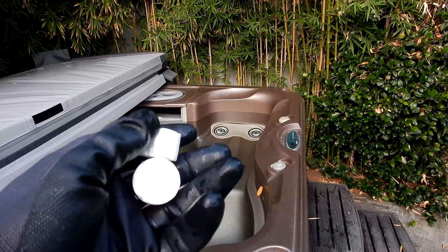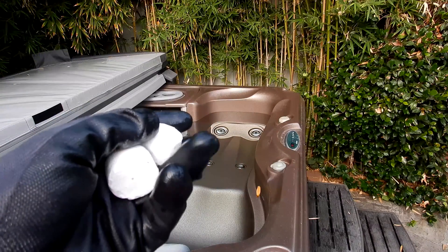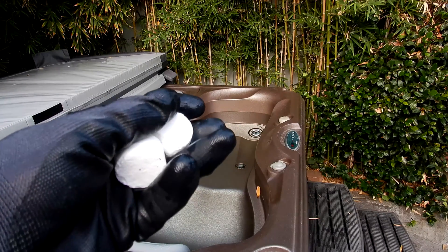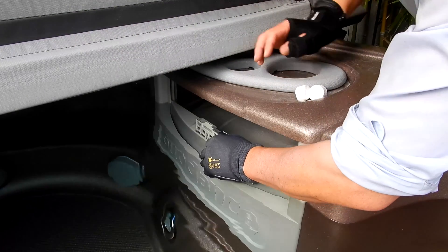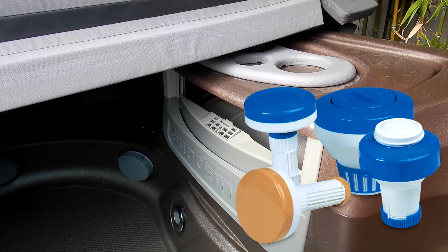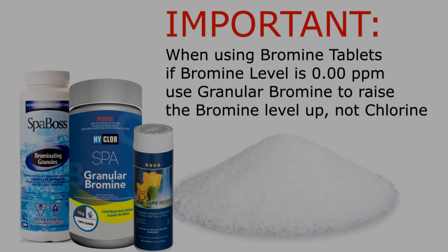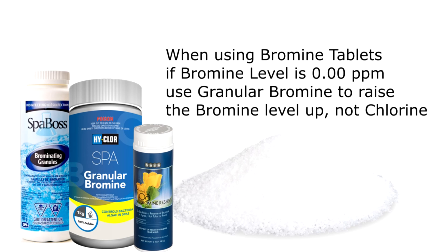If you're using bromine tabs, be aware that a little goes a long way — you don't need to overload with tablets. These bromine tabs are very slow dissolving and will keep your spa sanitized all week by releasing a small dose of bromine as they dissolve. This spa has an area in the front of the skimmer for the bromine tabs — simply lift it up and put the tabs in. If there's no receptacle in the skimmer, you can use a floater. If the bromine level drops to zero, use granular bromine to bring the level back up and activate the bromine tablets.